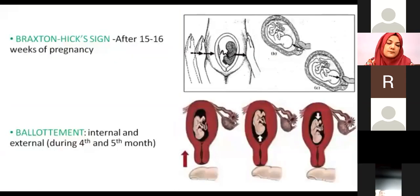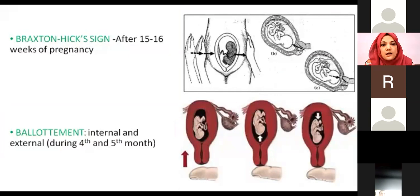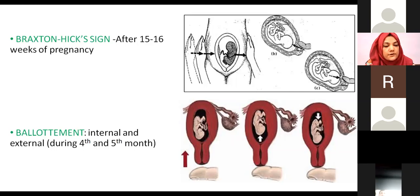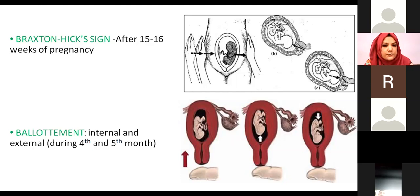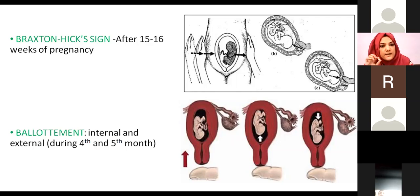Braxton Hicks contractions are spasmodic, intermittent, painless uterine contractions that begin after 15 to 16 weeks of pregnancy. Initially they are intermittent, lasting about one minute with an interval of 2 to 3 minutes, and they continue throughout the pregnancy. Even if the fetus has died in utero, Braxton Hicks contractions will still be present. So again, not a definitive sign.